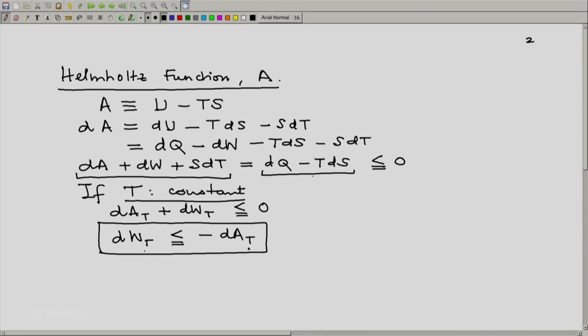So here we notice that the Helmholtz function can be considered as an energy potential, the reduction in which represents the maximum possible work which can be executed by our system in an isothermal process. And because of this, earlier and even now quite often, the Helmholtz function is also known as the Helmholtz potential.